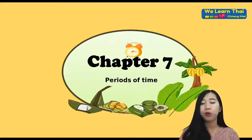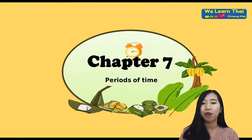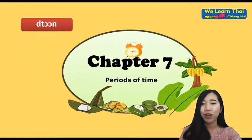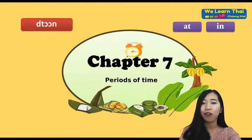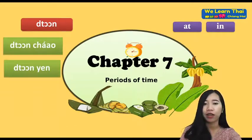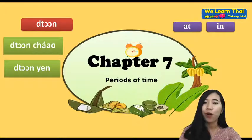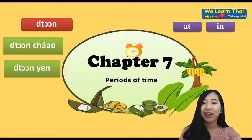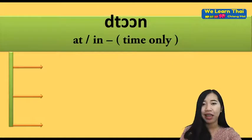Hi everyone, welcome to We Learn Thai e-learning. Today we have Chapter 7, which is 'Periods of Time.' The main focus of this chapter is the word 'ton.' The word 'ton' means 'at' or 'in' — we use it only for time. For example: ton chao or ton yen, meaning 'in the morning' or 'in the evening.' You will be able to ask people where they are going in the morning or afternoon, or ask about a daily schedule.